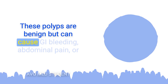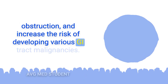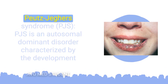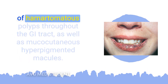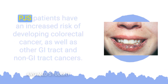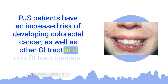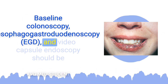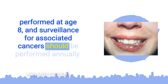These polyps are benign but can cause GI bleeding, abdominal pain, or obstruction, and increase the risk of developing various GI tract malignancies. Peutz-Jeghers syndrome is an autosomal dominant disorder characterized by the development of hamartomatous polyps throughout the GI tract, as well as mucocutaneous hyperpigmented macules. PJS patients have an increased risk of colorectal cancer as well as other GI tract and non-GI tract cancers. Baseline colonoscopy, esophagogastroduodenoscopy, and video capsule endoscopy should be performed at age 8, and surveillance for associated cancers should be performed annually.